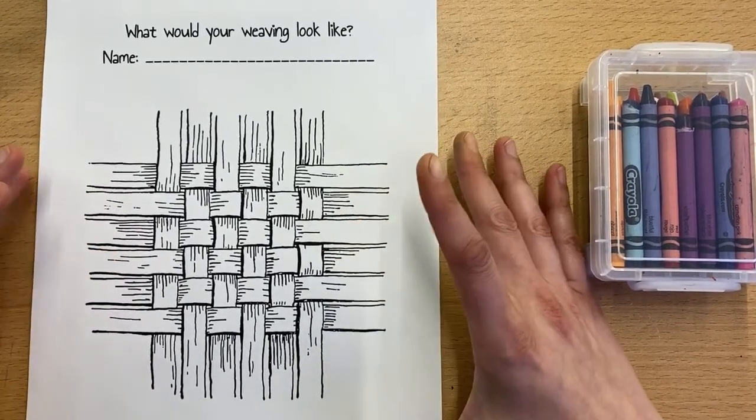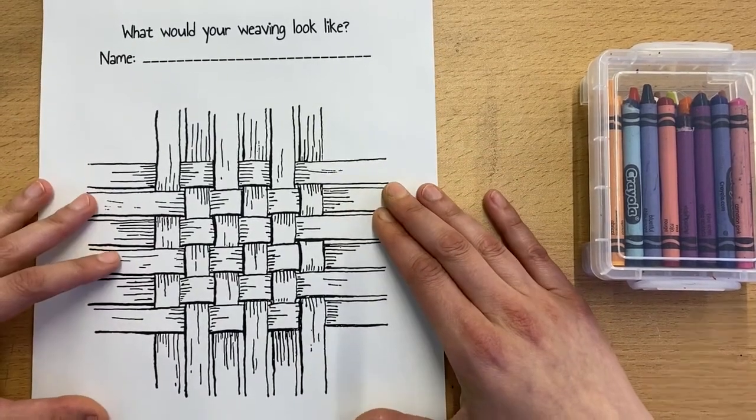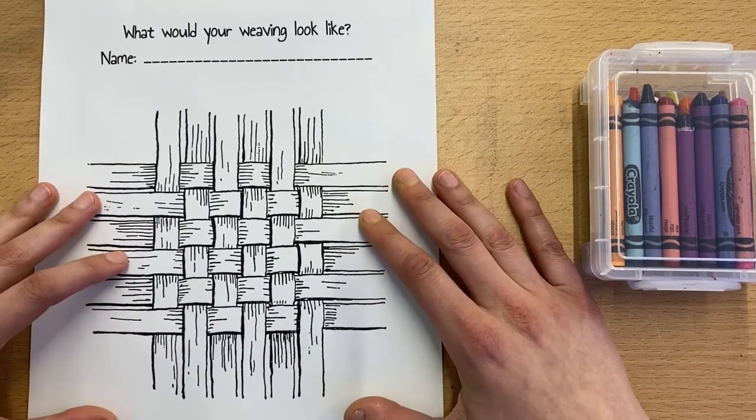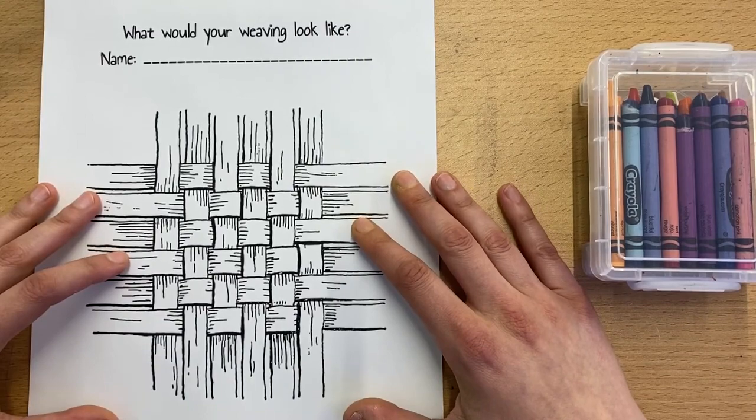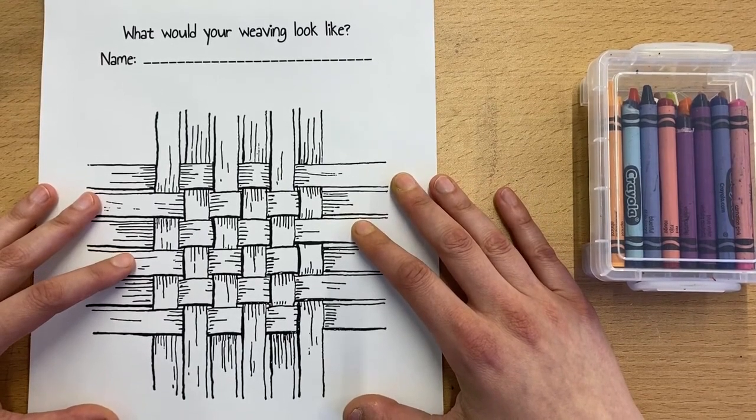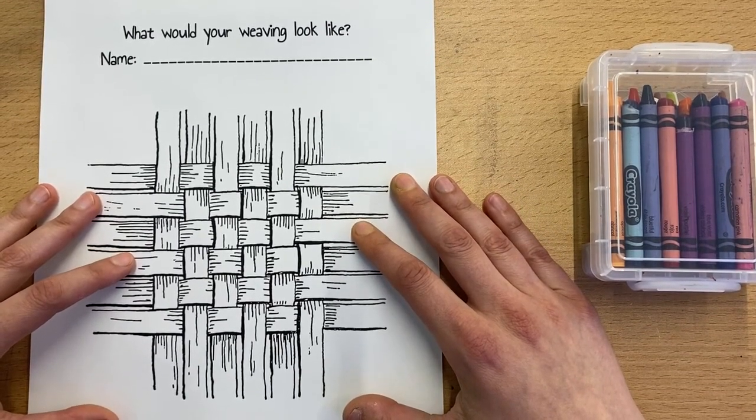Maybe you want it to be a rainbow like in the book. Maybe you just want to pick a couple different colors that can go together. So this is some practice and to help get you thinking about what you want your weaving to look like when we get started on it next week.